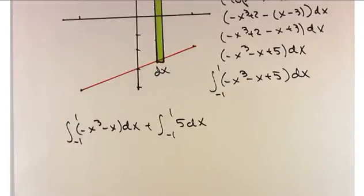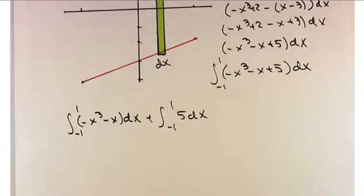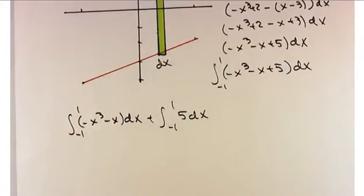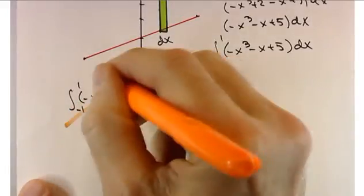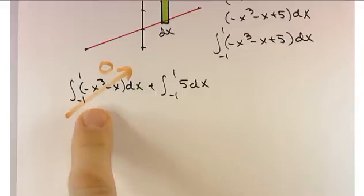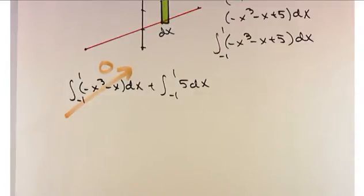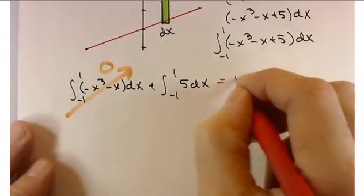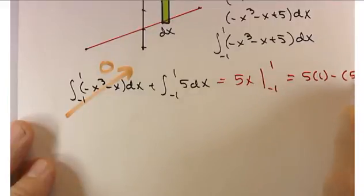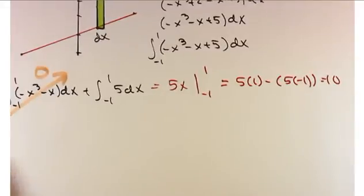The first integral is over a symmetric interval with an odd function, so it equals zero. That's really nice — we can just replace that with zero. For the second part: 5x evaluated between negative 1 and 1 gives 5 times 1 minus 5 times negative 1, which equals 10. If you missed the odd function shortcut it's not a big deal — you'd still get it with correct arithmetic. But it's worth noticing.